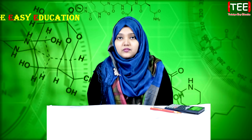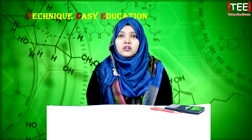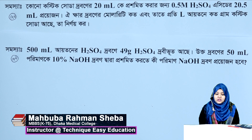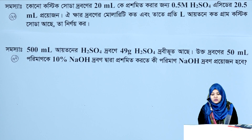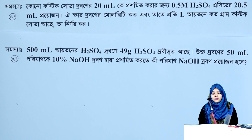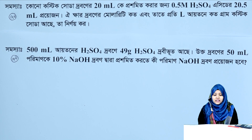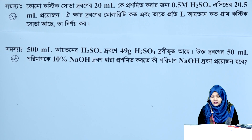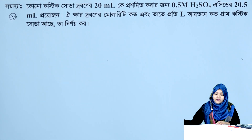Assalamualaikum. We have 0.5 molar sulfuric acid. 20.5 milliliter. We need to find the molarity. Given: 150 L volume, 0.5 mL. Also given 49 grams, 1.5 mmol per liter, 10% sodium hydroxide solution, 0.5 mL. Now we have the problem set up.